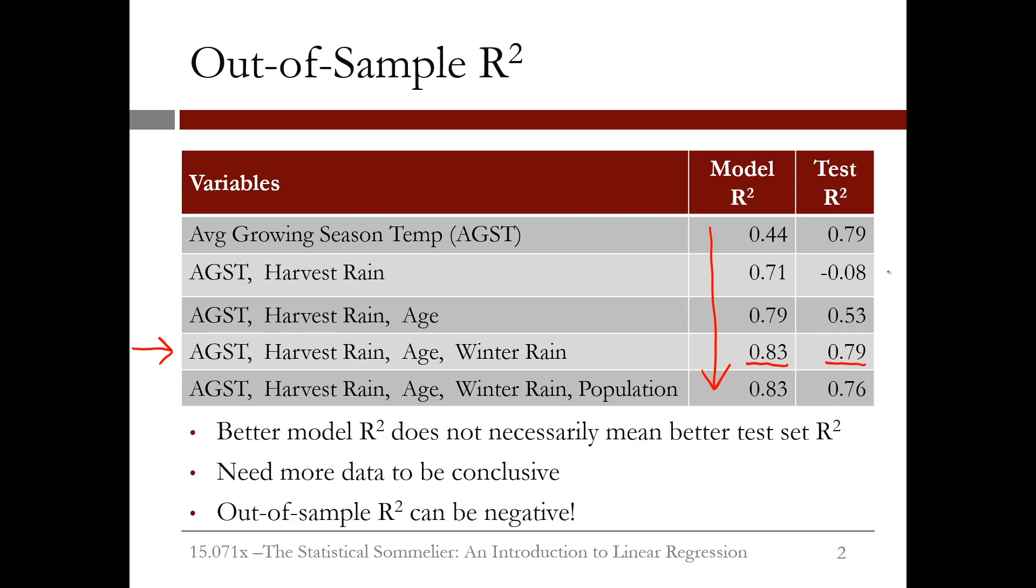Note here that the test set R² can actually be negative. The model R² is never negative because our model can't do worse on the training data than the baseline model. However, our model can do worse on the test data than the baseline model does. This leads to a negative R² value.